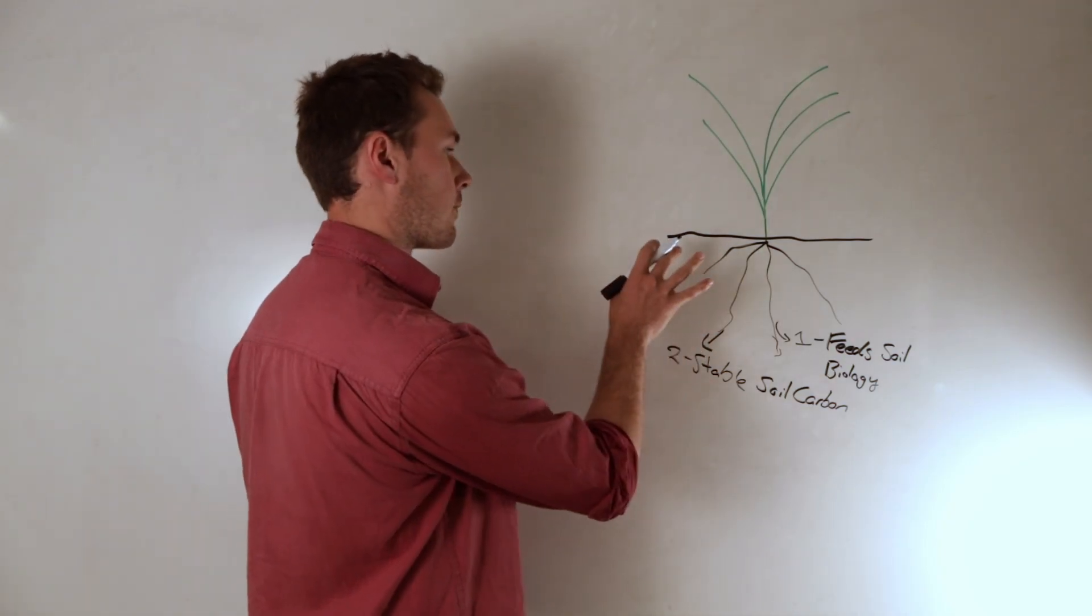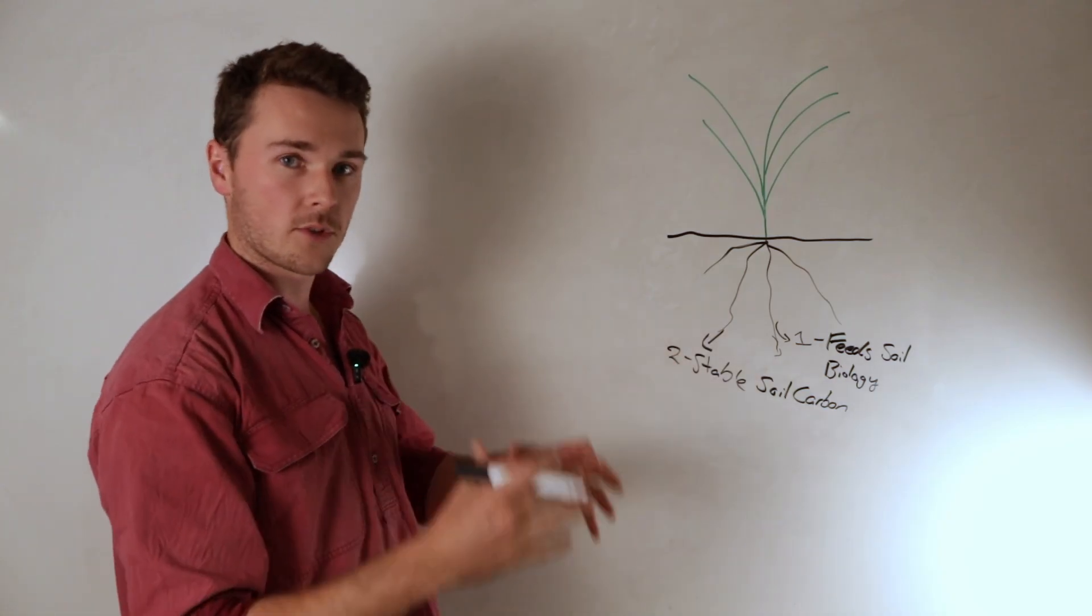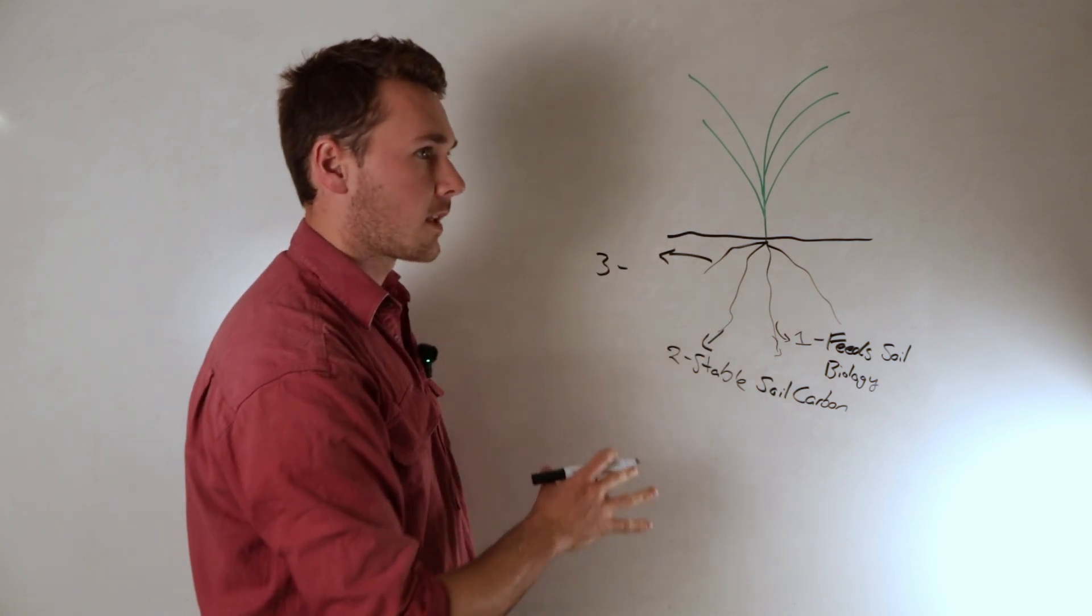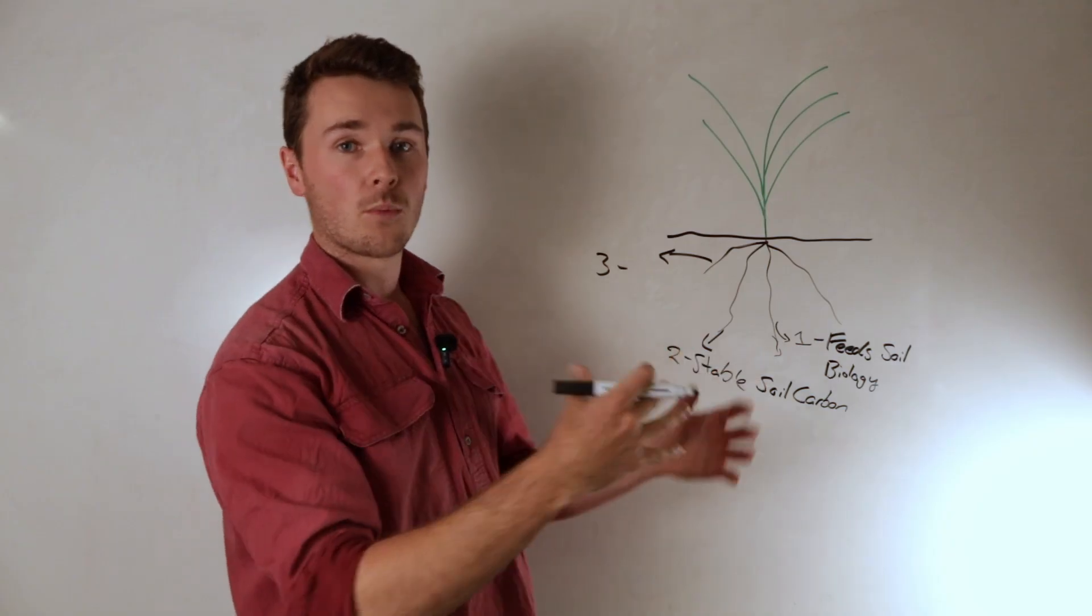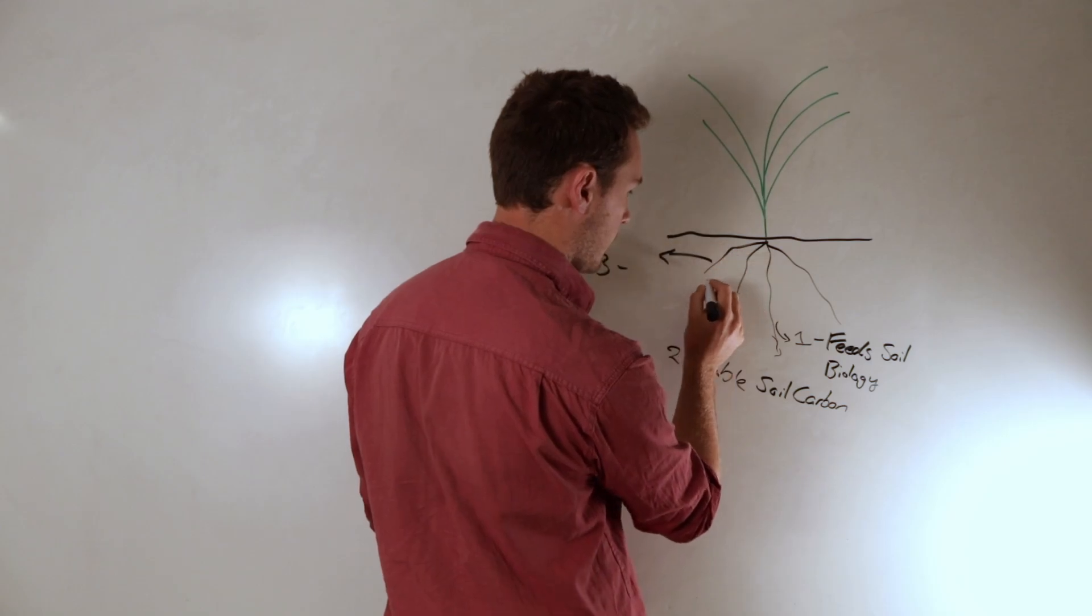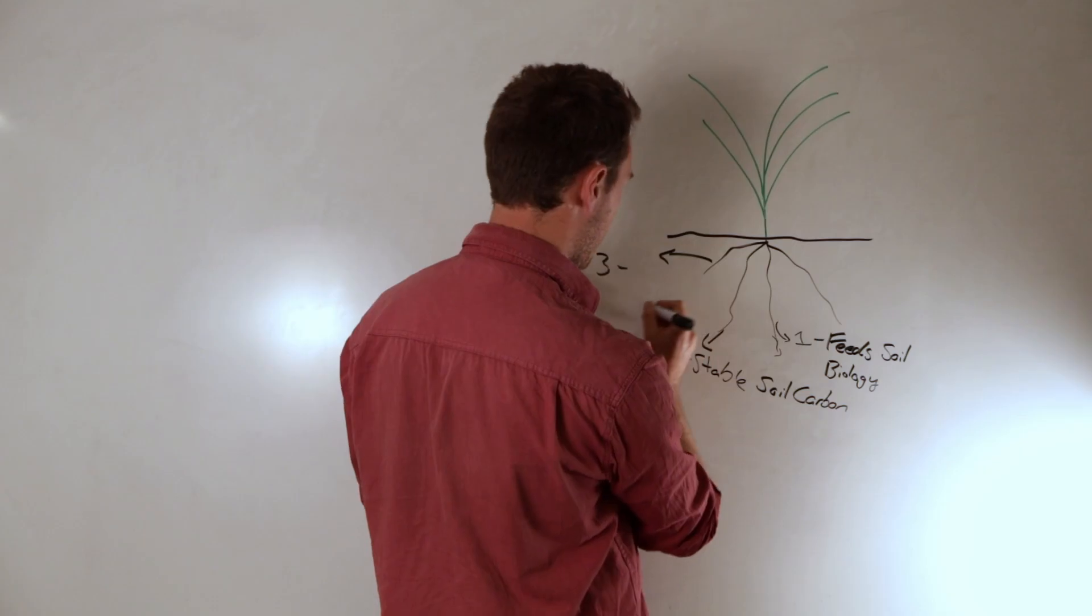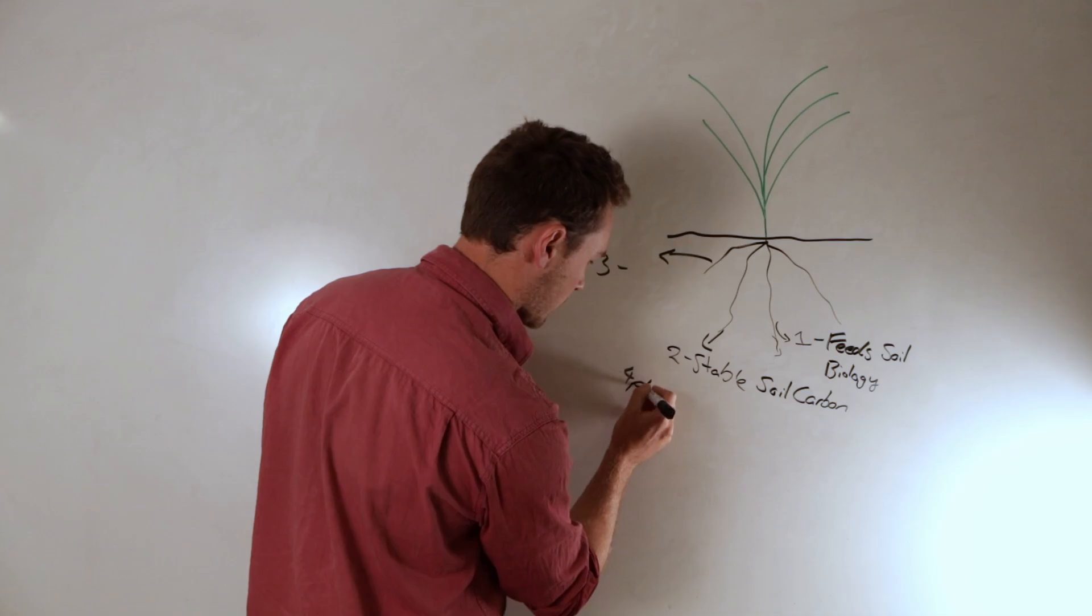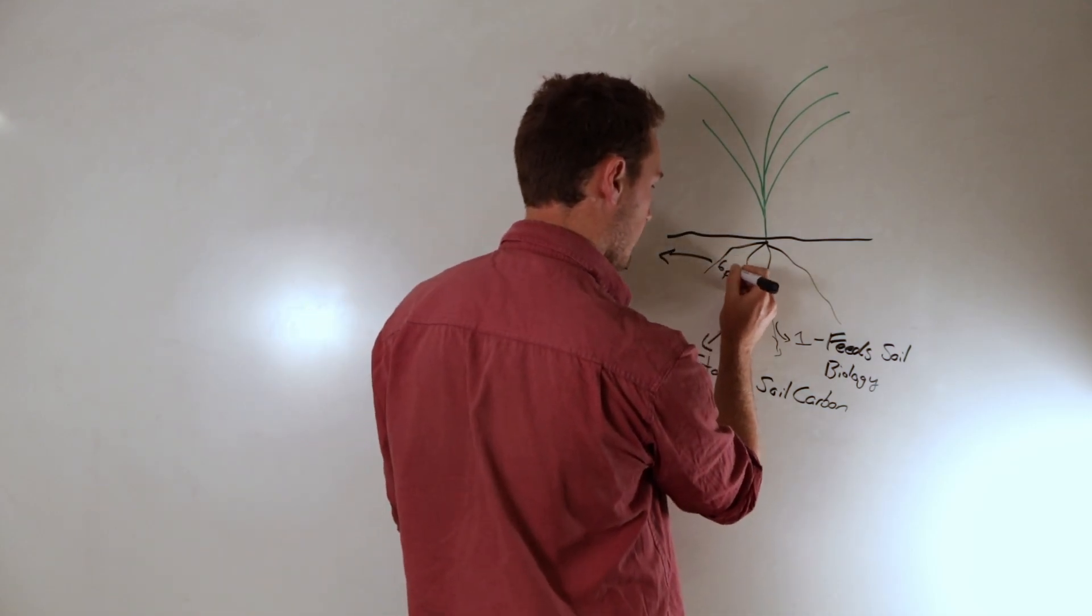Another really important function of root exudates is that the plant can regulate the pH of the rhizosphere. In acidic soils, the plant can release bicarbonates which then react with hydrogen and form water and carbon dioxide, and it means that the zone around the root zone can be up to two units of pH higher. So if the bulk soil is say pH 4, which is very acidic,